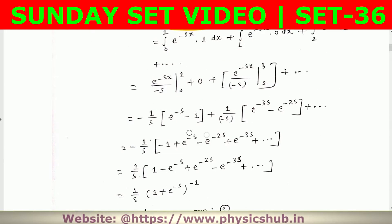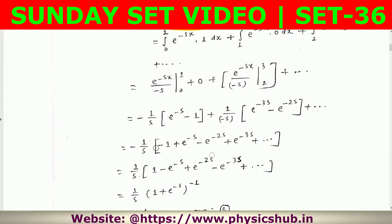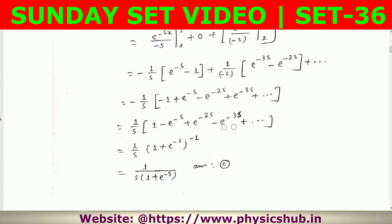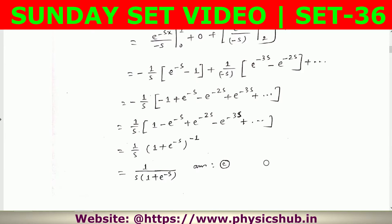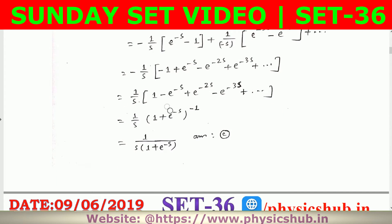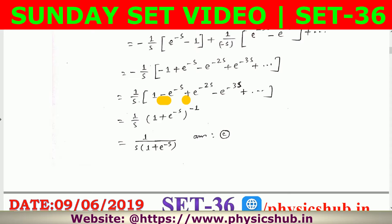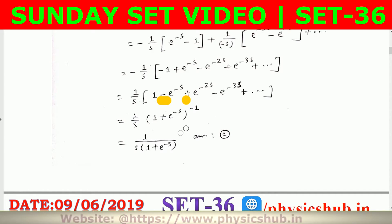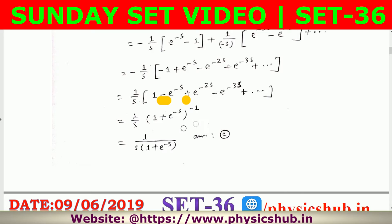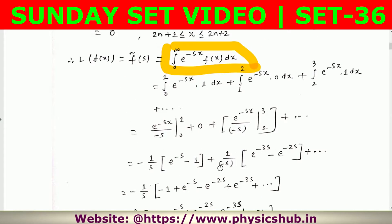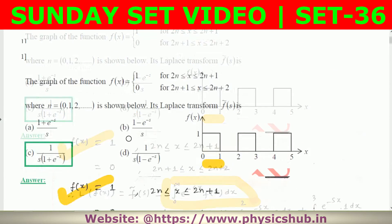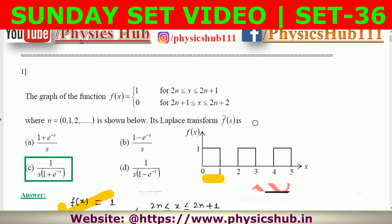Evaluating the integration, we get a series: 1 plus x to the power minus 1 with alternating signs (minus, plus, minus...). Here x is e^(−s), so we get 1/s times 1/(1 + e^(−s)). This matches option C, so option C is the correct answer. For the mathematical methods section, Laplace transformation is a very common question type.